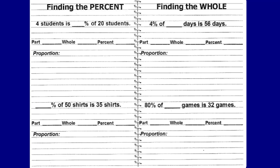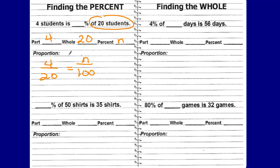Here's page two of your packet — we're going to do some practice problems, and first we're going to practice finding the percent. Four students is what percent of 20 students? The 'of 20 students' represents the whole. The four students is your part, and the percent is the unknown. Set up your proportion: part to whole, 4 out of 20, is equivalent to n out of 100. We're going from the known to the unknown, left to right, from 20 to 100 — multiply by five. Use the same scale factor on the four, and n equals 20%.